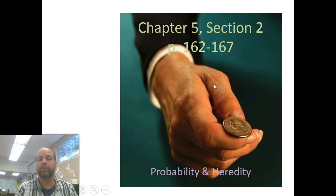Hello and welcome again to another screencast. My name is Curt Knox. I'm here with Mrs. Erling as well as Mrs. Kim. This is about chapter 5 section 2, probability and heredity. As always, you should have already read the book or be following along on page 162 through 167.